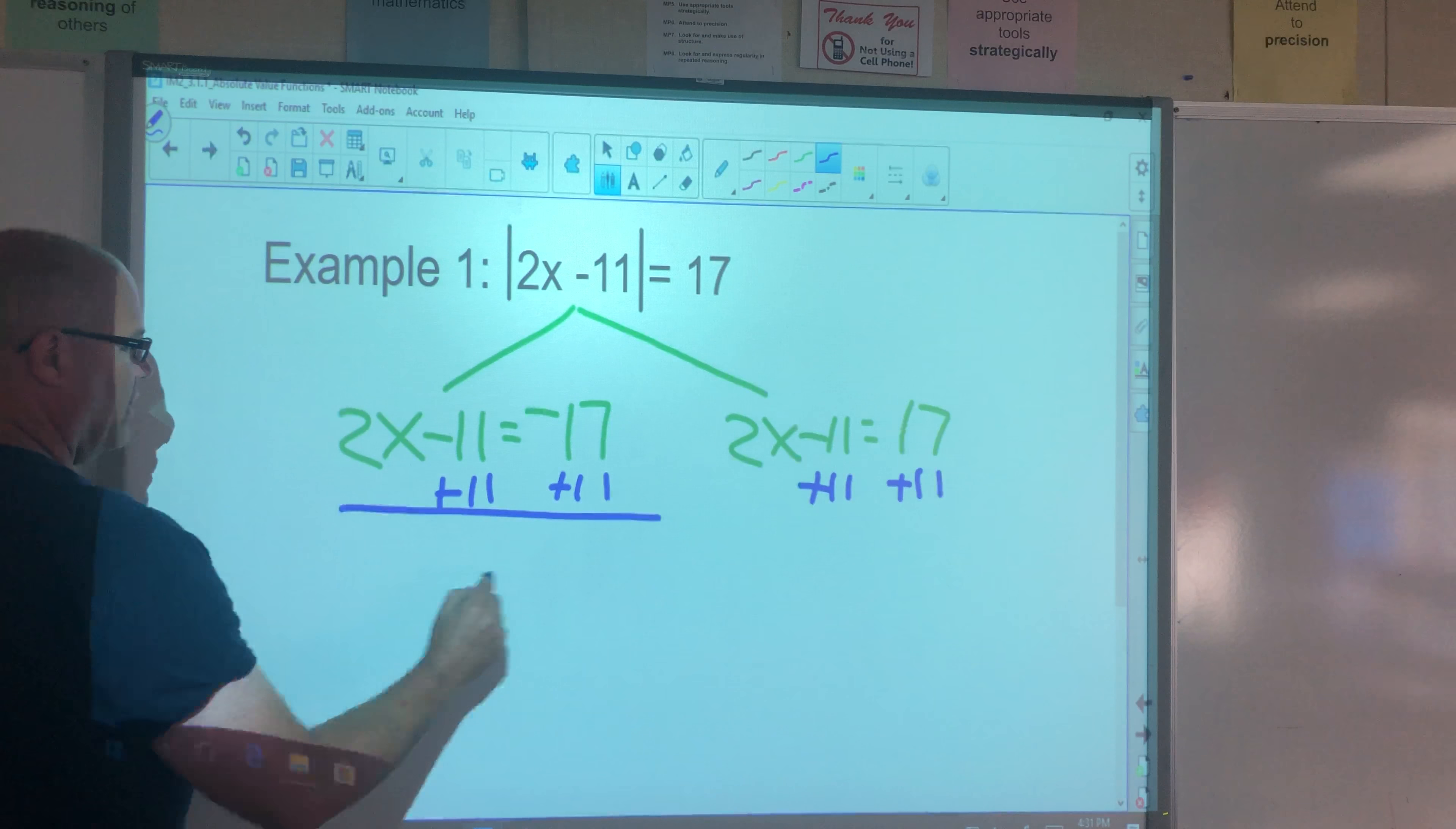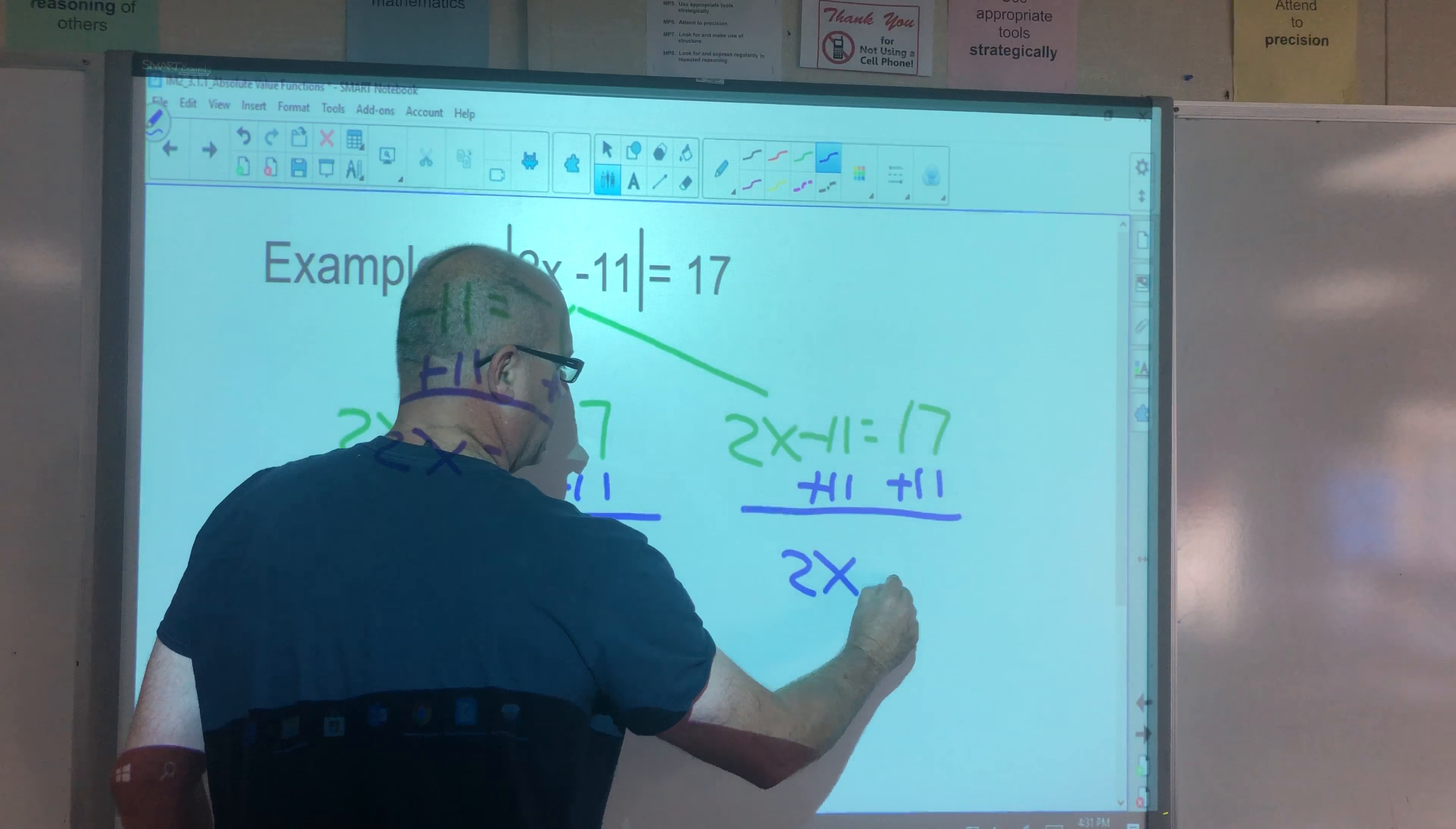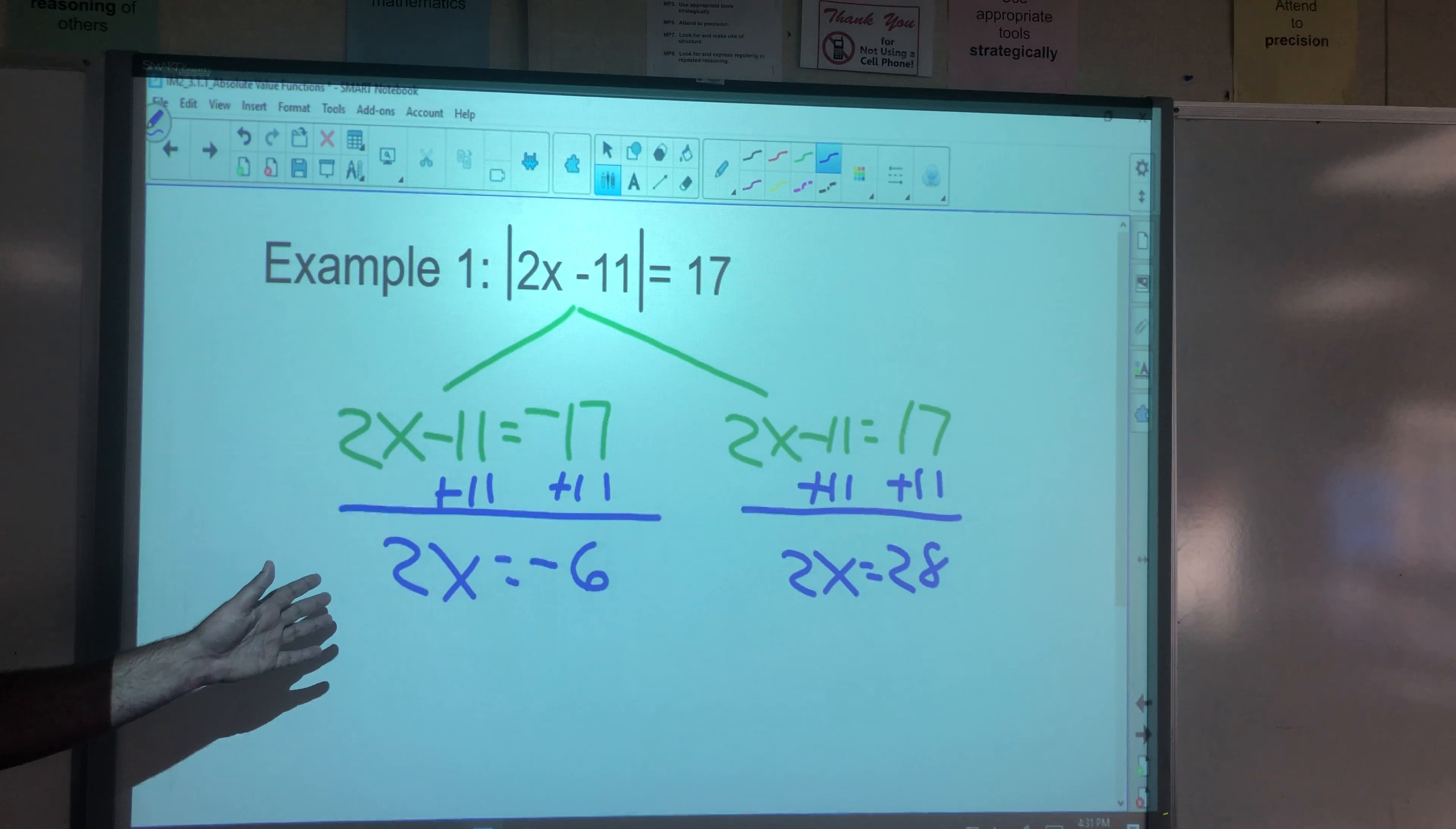So then we get 2x equals, what's that, negative 6. And this side, we're going to get 2x equals 28. Now, we want to solve for x. We want 1x, not 2x. So we're going to divide both sides by 2.